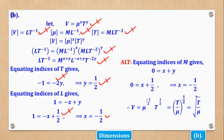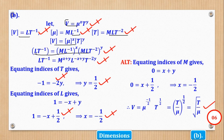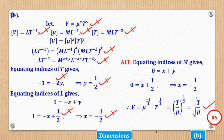For the mark allocation: half a mark for the formula, half a mark each for the three dimensions, half a mark for correct substitution with curved brackets, half a mark for equating powers of T, half a mark for the value of Y, then equating and finding X, and a full mark for the required expression. That's how the 6 marks come about.